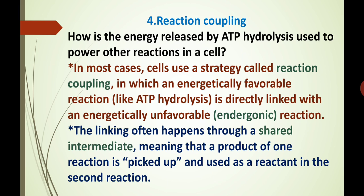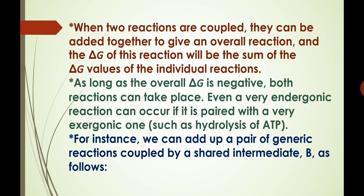Now we have to see reaction coupling — how is the energy released by ATP hydrolysis used to power other reactions in a cell? In most cases, the cell uses a strategy called reaction coupling, in which an energetically favorable reaction like ATP hydrolysis is directly linked with an energetically unfavorable, that is endergonic, reaction. The linking often happens through a shared intermediate, meaning that a product of one reaction is picked up and used as a reactant in the second reaction. When two reactions are coupled, they can be added together to give an overall reaction, and the delta G of this reaction will be the sum of the delta G values of the individual reactions. As long as the overall delta G is negative, both reactions can take place.